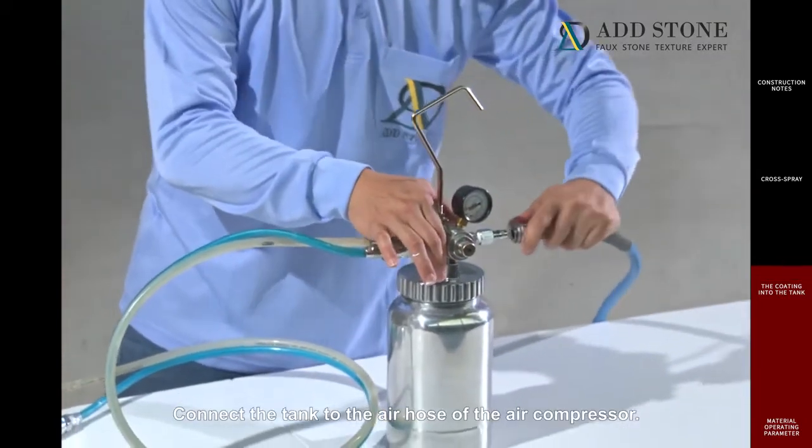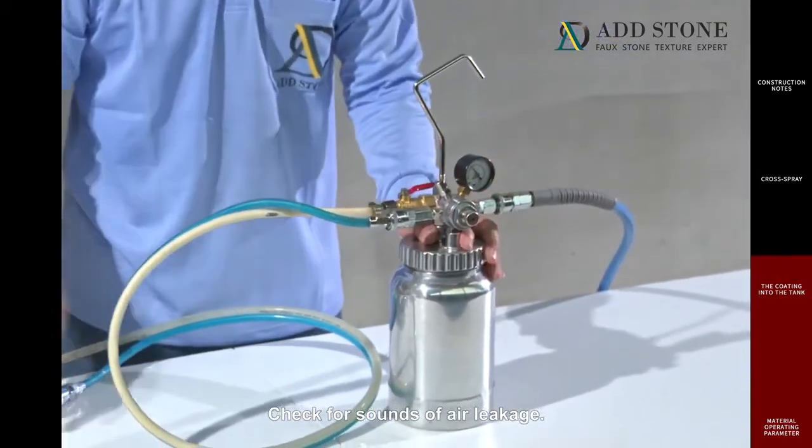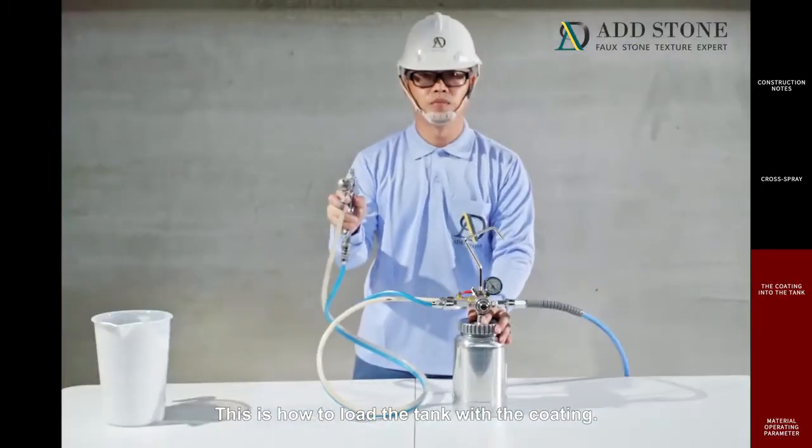Connect the tank to the air hose of the air compressor. Check for sounds of air leakage. This is how to load the tank with the coating.